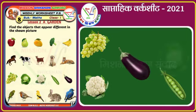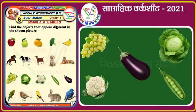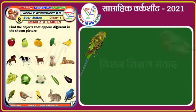Here we can see grapes, cabbage, cauliflower, pea, and brinjal. Among these, cabbage, cauliflower, pea, and brinjal are vegetables. And grapes is a fruit. That is why grapes will be the odd one out.